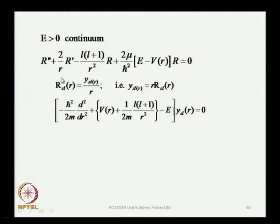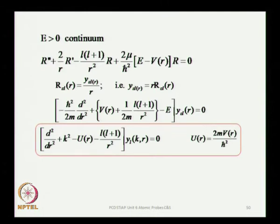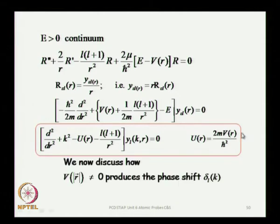We set up the differential equation for y, where y/r is the radial function. With this choice, y must satisfy a differential equation. If we remove constants by defining the potential as 2mV/ℏ², we can write it in a simple and concise form. We will now discuss how the potential V(r) produces that phase shift — the result we made use of in our previous class. Today we will first demonstrate how the scattering phase shift is produced by the potential.